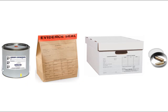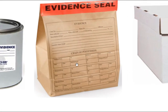Here are some examples of evidence packaging. For arson evidence, paint cans are used — they're airtight to prevent gasoline from evaporating. Here's a paper bag, which is not airtight and not designed to be. Packaging containers also have areas where you must write down who collected the evidence and when — this is the chain of custody.